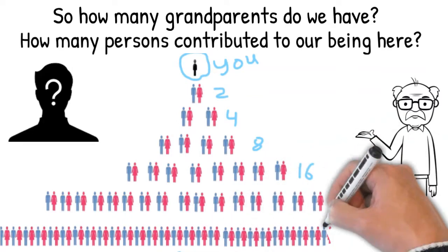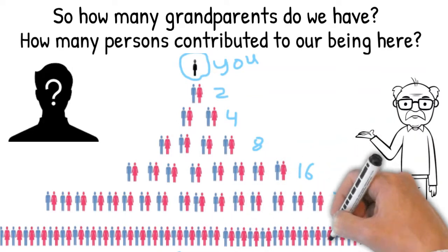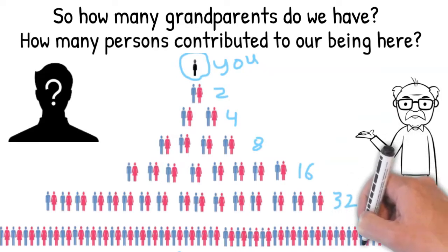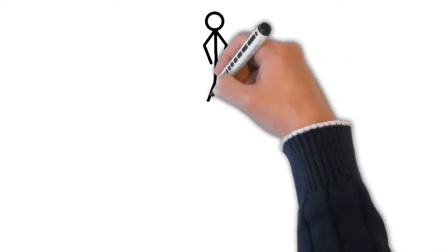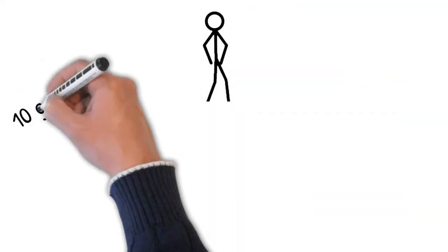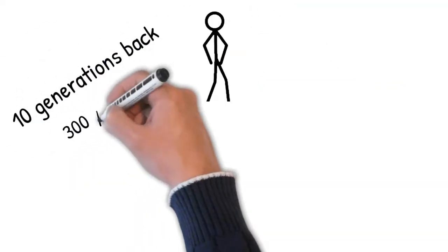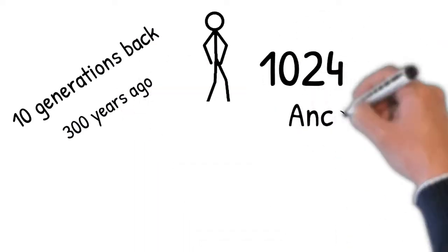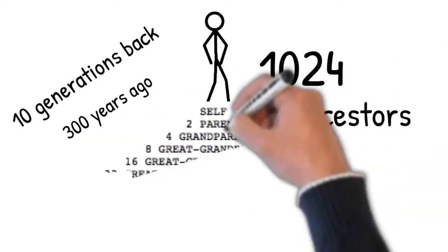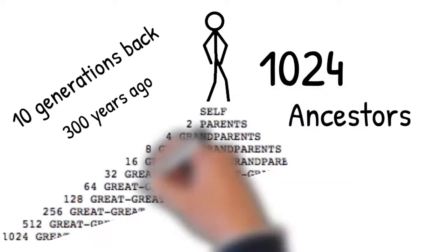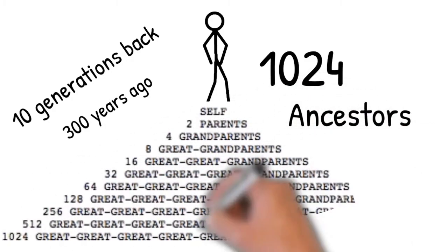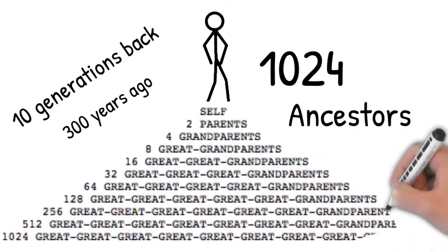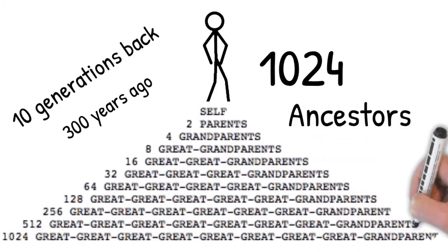Further down, eight great-grandparents will have 16 parents. Likewise, if we go until 10 generations back — around 300 years ago, taking 30 years on average for each generation — we would have 1,024 tenth-generation ancestors. This number would reduce if cousins marry, as they will have common ancestors.